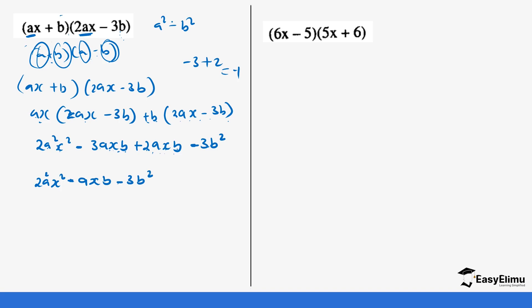You see, this doesn't give us the answer that we would get if we had a and b values that are equal. So always be careful. We can use the identity, but only in situations where the values are the same.